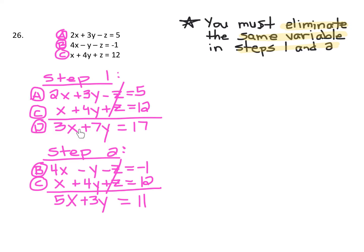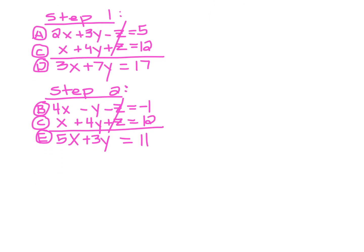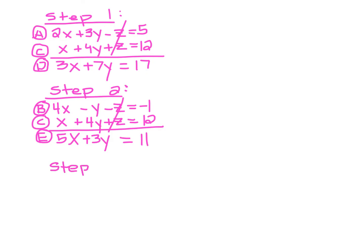In step 1, we created a new equation in terms of two variables and labeled it D. In step 2, we created another new equation in terms of two variables — we need to give that a label too. If you create an equation you may need in a future step, just label it. So this is equation E. So far we have equations A, B, C, D, and E. Now in step 3, we're going to use those two equations we made in steps 1 and 2 — equations D and E.